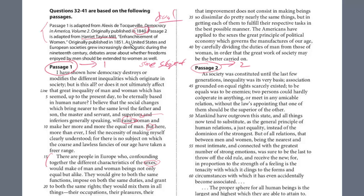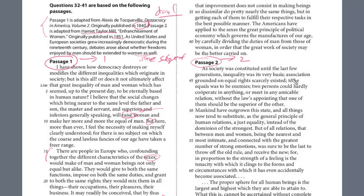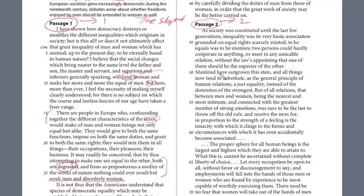Passage 2 is written by Harriet Taylor Mill — 'Enfranchisement of Women.' To be enfranchised means to have the right to vote, to have full rights. Originally published in 1851. As the United States and European societies grew increasingly democratic during the 19th century, debates arose about whether freedoms enjoyed by men should be extended to all women. Some key points: she's saying two persons could hardly cooperate in any amicable relationship without the law's appointment that one of them should be superior — that's how it used to be, men always had more rights. But now all things tend to substitute a just equality instead of the dominion of the strongest.